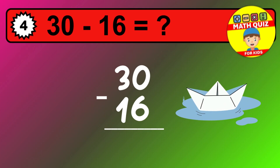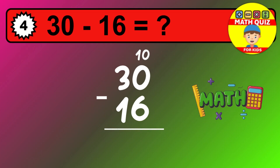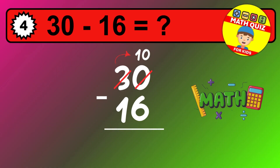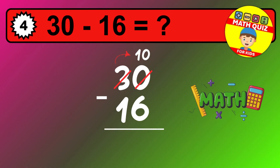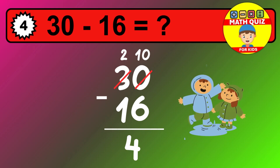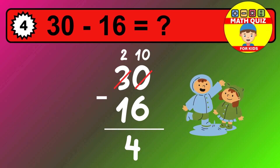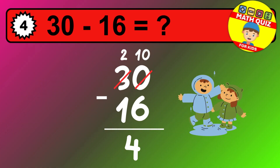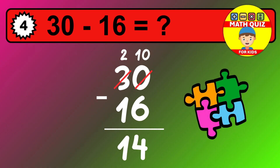Let's solve this step by step. We start with the units. 0 minus 6 is not possible, so we need to regroup. We take one 10 from the tens column. Now we have two tens, and the units become 10. Now we subtract. 10 minus 6 is 4. Then we go to the tens. 2 minus 1 is 1. The final answer is 14.